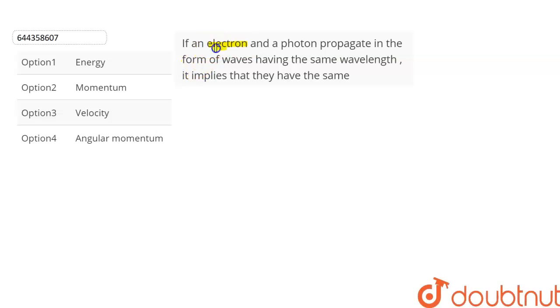The question is: if an electron and a photon propagate in the form of waves having the same wavelength, then it implies that they have the same... We are given four options from which we have to choose the correct option. Let's find out.